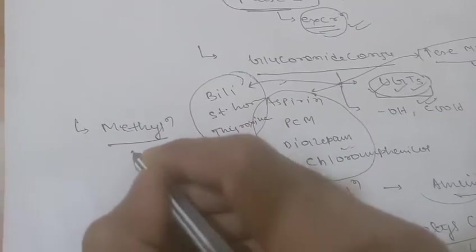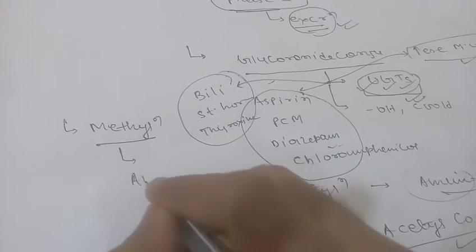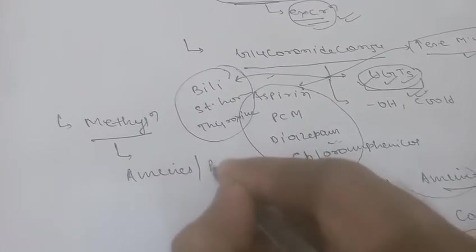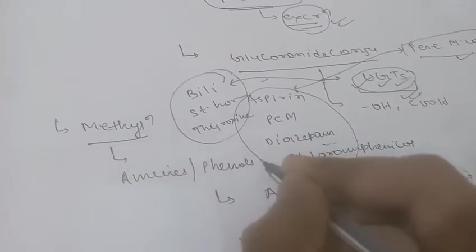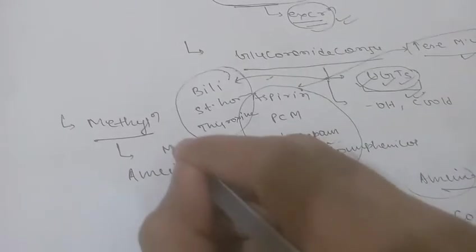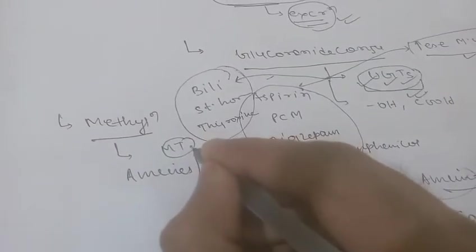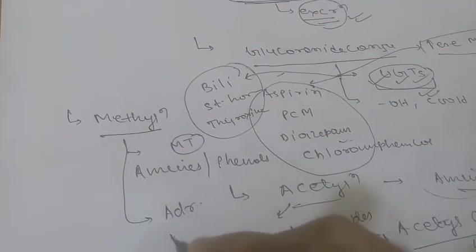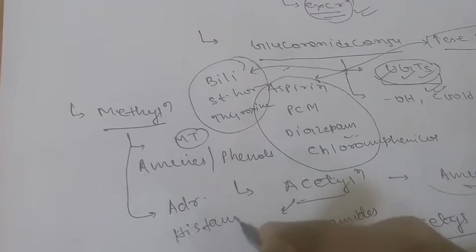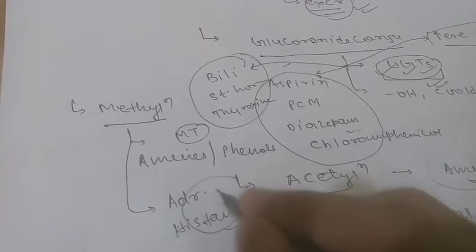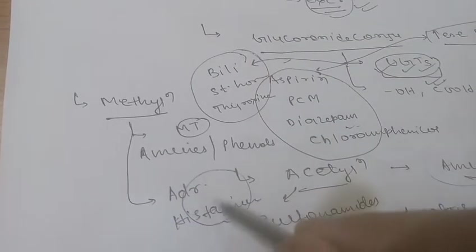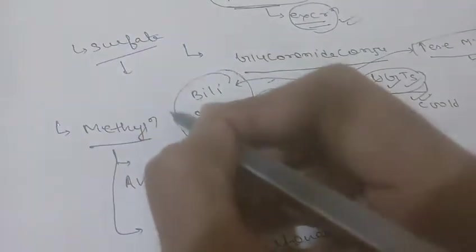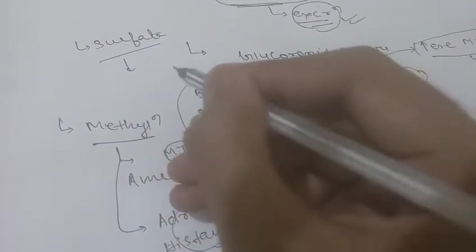The third phase 2 reaction is methylation. In methylation, amines and phenols are mainly methylated by the enzyme methyltransferase. Common drugs that undergo methylation include adrenaline, histamine, and methyldopa.